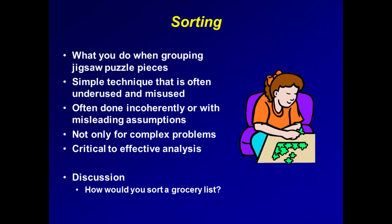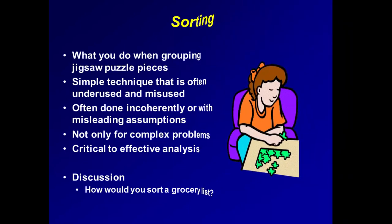For example, in preparing a grocery list, it facilitates shopping to group items on the list according to their location in the store, as one moves from aisle to aisle. Of course, as the complexity and ambiguity of a problem increase, sorting and the nature of the sorting become critical to effective analysis.